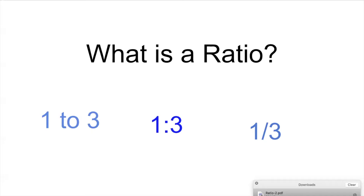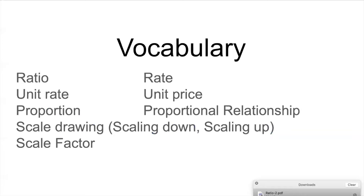So one-third of the animals are birds. Keep in mind when showing students, we want them to know ratios in all three forms: as a fraction, with the colon, and with the word 'to.' That's important. In our vocabulary for ratios, we're going to cover several things today, but we'll save proportions for next time, because some of our kids probably aren't ready for it, and we need to not skip how important ratios really are.